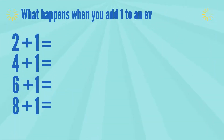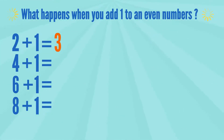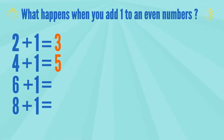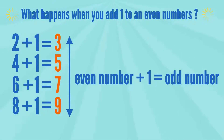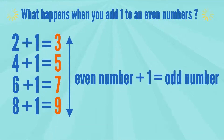Adding 1 to an even number: 2 plus 1 equals 3. 4 plus 1 equals 5. 6 plus 1 equals 7. And 8 plus 1 equals 9. That means an even number plus 1 equals an odd number.